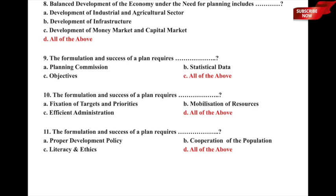Question 10: The formulation and success of a plan requires dash. The options are a) fixation of targets and priorities, b) mobilization of resources, c) efficient administration, or d) all of the above. Option d) all of the above is the correct answer, covering targets, resources, and efficient workforce for plan implementation.